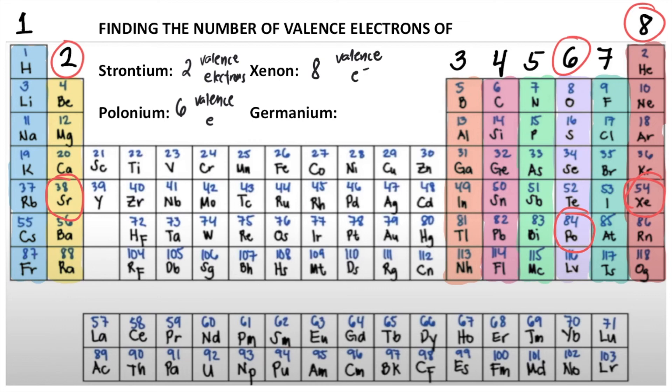Lastly, we have germanium. So germanium is Ge. It's under column 4. So germanium has 4 valence electrons.